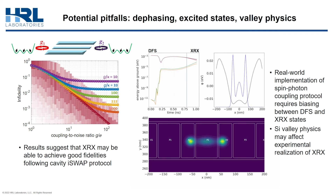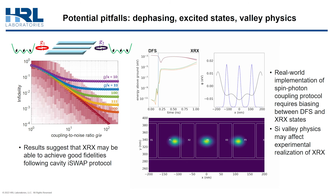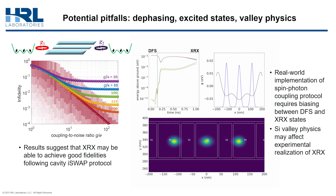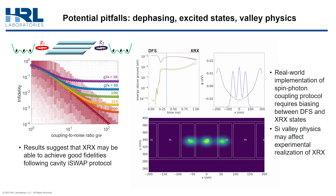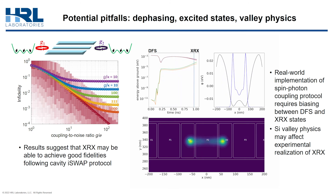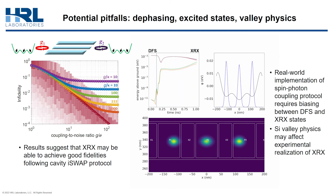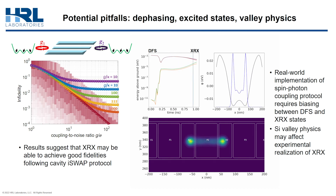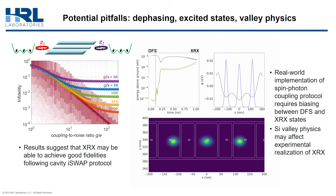However, a real-world implementation of this protocol will require actually biasing between DFS and XRX. There is a non-trivial optimization problem here, because you cannot bias too slowly — or else you open yourself up to charge noise along the path — but you can't bias too quickly either, or else you might populate excited states non-adiabatically.